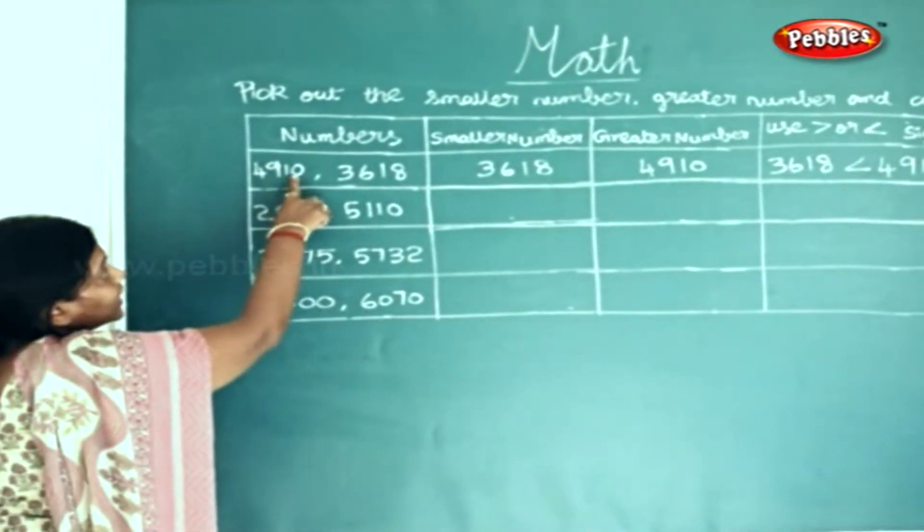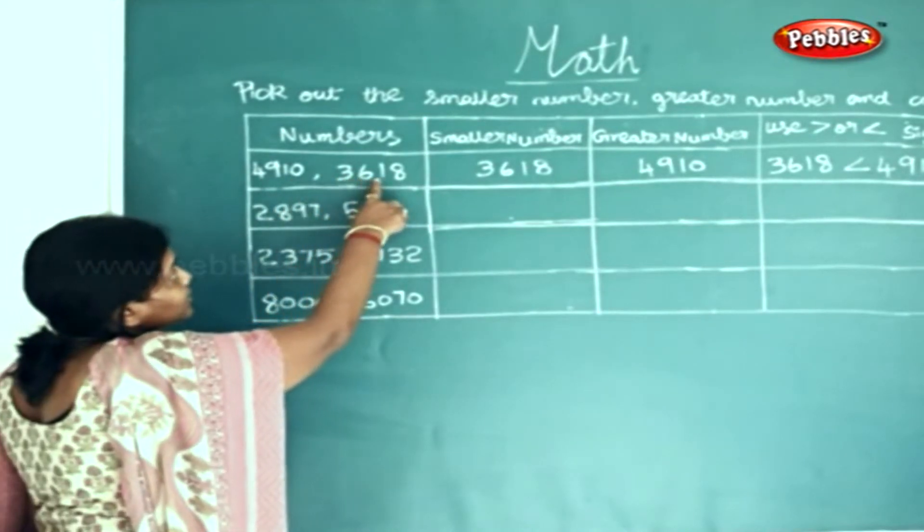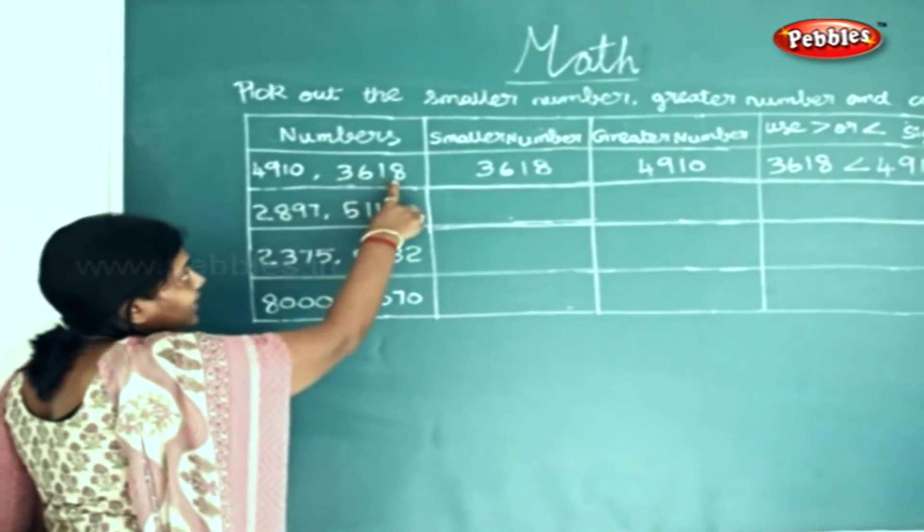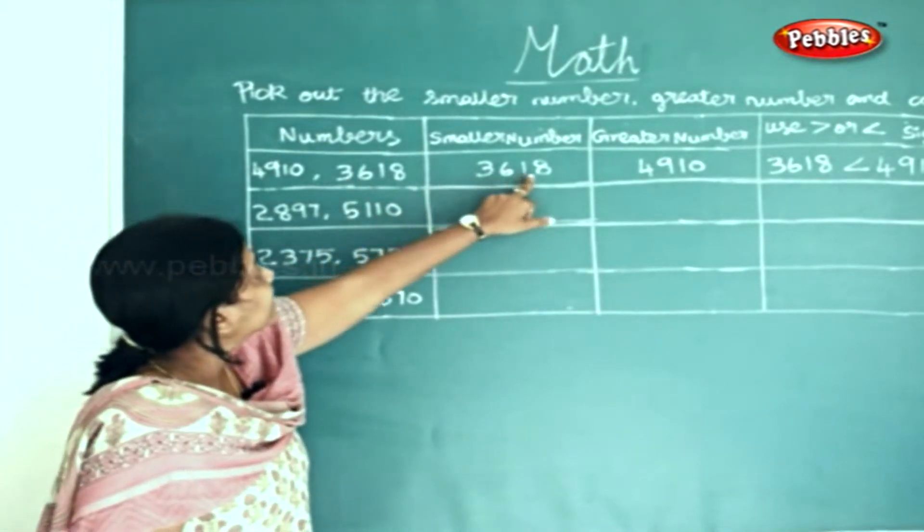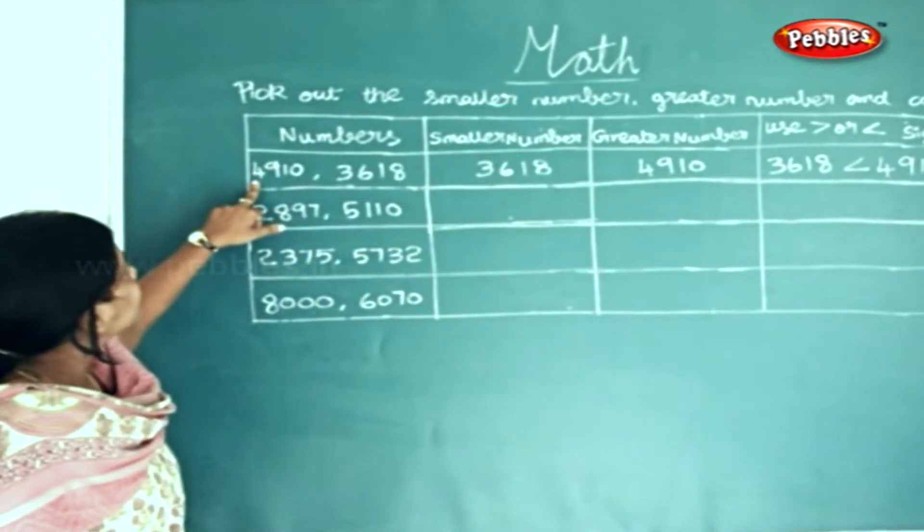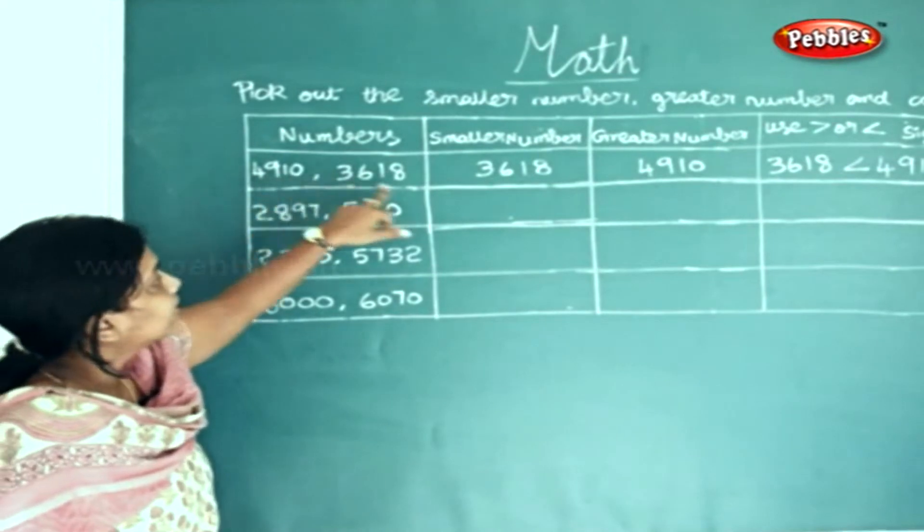Now, numbers 4910, 3618. The smaller number is 3618 and the greater number is 4910.